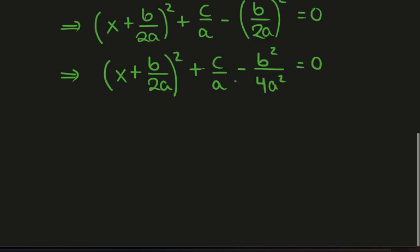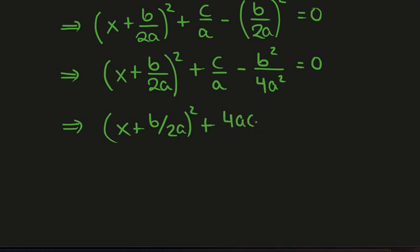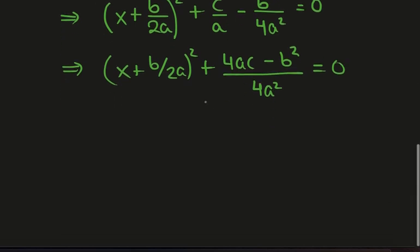We have x plus b over 2a squared plus c over a minus b squared over 4a squared. To make a common denominator of 4a squared, we need to have 4ac minus b squared over 4a squared, and this all equals zero. Now I'll take this term over to the right-hand side.